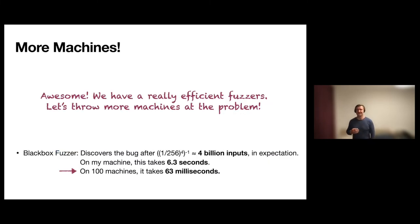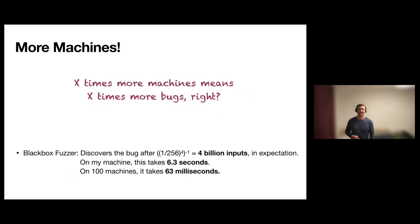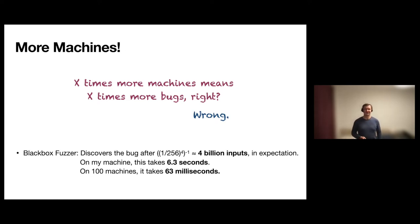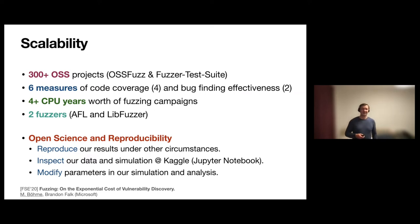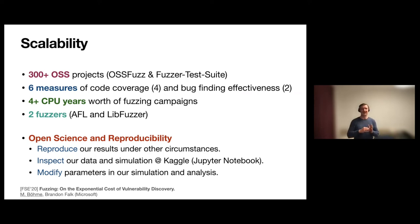Now we have a really efficient fuzzer. Let's throw more machines at the problem. Earlier I said if I executed the program on 100 machines it would take 63 milliseconds. You might think X times more machines means finding X times more bugs, right? Wrong. We looked at a lot of fuzzing data collected over the years — CPU years worth of data on around 300 open source projects — and looked at six measures of code coverage to see what happens if you increase the number of machines to whatever measure we have, like number of vulnerabilities found.